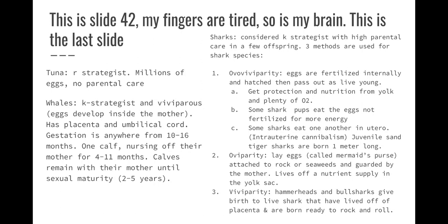Oviparity: they lay eggs, usually called a mermaid's purse. The shark releases its eggs without allowing them to hatch inside — the eggs are attached to rocks or seaweed, guarded by the mother, and the young live off the yolk sac's nutrient supply. Viviparity — like hammerheads and bull sharks — they give birth to live sharks that have lived off a placenta, and are born ready to survive. Covering all three: ovoviviparity, oviparity, and viviparity.